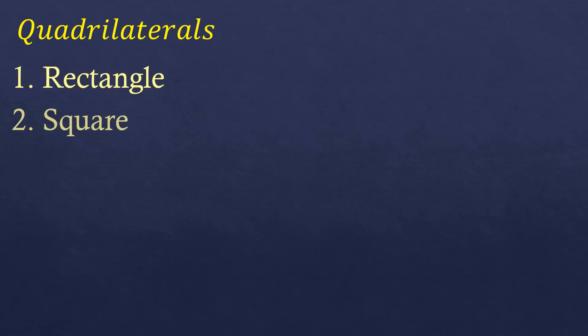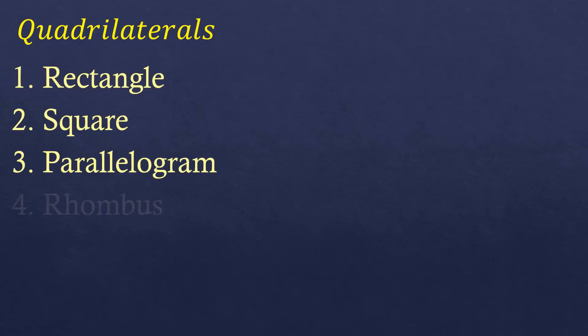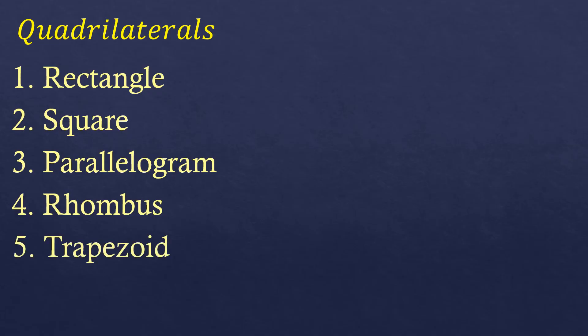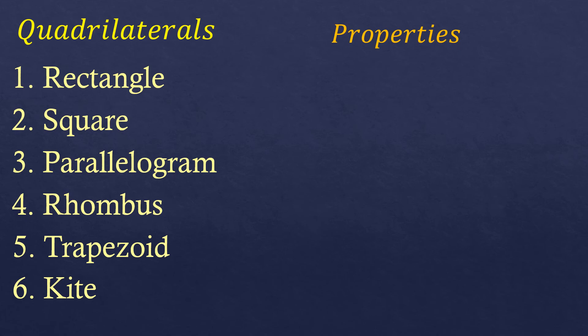Now let's talk about quadrilaterals. The properties of quadrilaterals depend on its type, and there are six of them: rectangle, square, parallelogram, rhombus, trapezoid, and kite. Each of these types of quadrilaterals has different properties. But we're going to talk about the general properties of quadrilaterals, and there are only two.